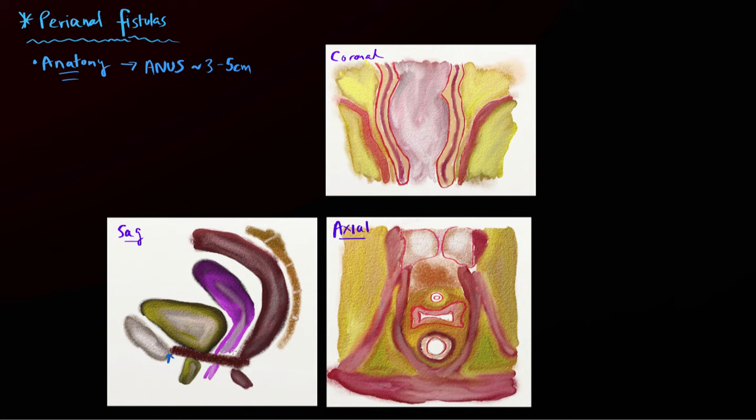It actually goes all the way across and slings over again. Everything above the puborectalis is going to be the large bowel — the rectum and sigmoid colon. Everything below it, from this location essentially all the way down to the anal verge, is going to be the anus.